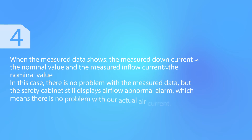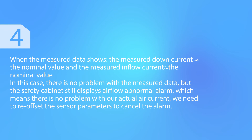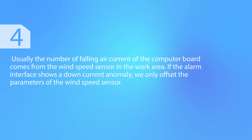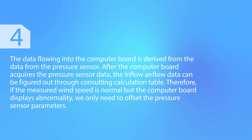When the measured data shows that the measured down current matches the nominal value and the measured inflow current matches the nominal value, there is no problem with the measured data, but the safety cabinet still displays an airflow abnormal alarm. This means there is no problem with our actual air current, and we need to re-offset the sensor parameters to cancel the alarm. The down current reading on the computer board comes from the wind speed sensor in the work area — if the alarm shows a down current anomaly, offset only the wind speed sensor parameters. The inflow data is derived from the pressure sensor; after the computer board acquires the pressure sensor data, the inflow airflow is calculated through a lookup table. Therefore, if the measured wind speed is normal but the computer board displays an abnormality, we only need to offset the pressure sensor parameters.